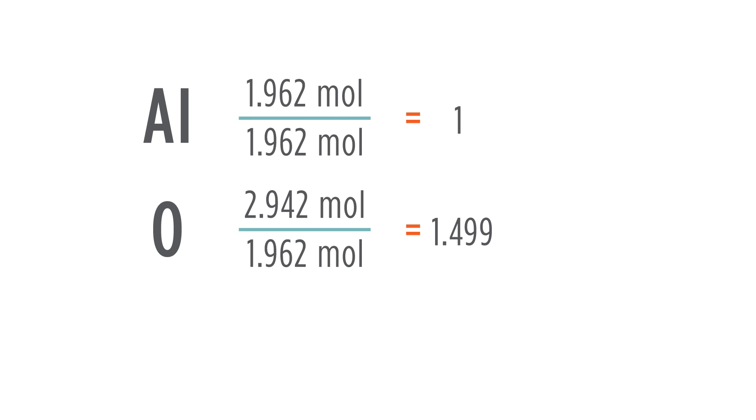Now if we tried to put this as subscripts, we'd have aluminum 1 (most often you don't see the one) and then 1.5. We can't have half an atom, so therefore we need to multiply. Point five, we know we can make that an integer by just multiplying by two. So we're going to take both of these values and multiply by two. That'll give us two and three.